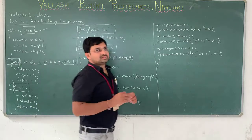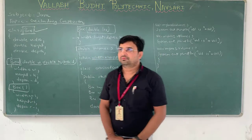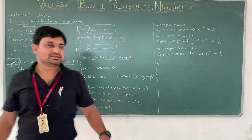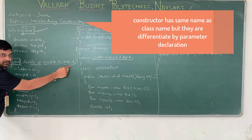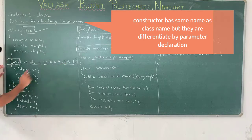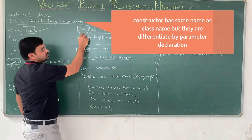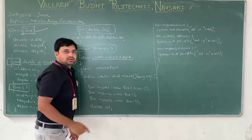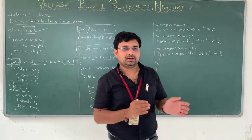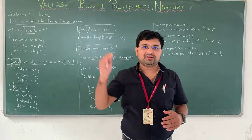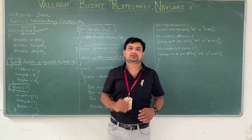Now the question is: how can we differentiate these constructors? In the first constructor we declare 3 parameters, in the second we do not declare any parameter, and in the third constructor we declare 1 parameter. So by the number of parameters declared in the constructor, we can differentiate all the overloaded constructors.